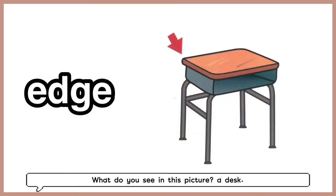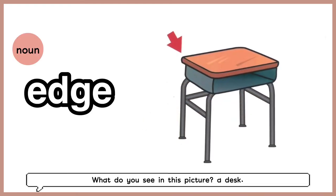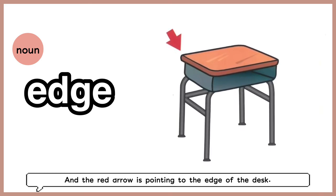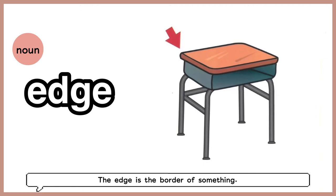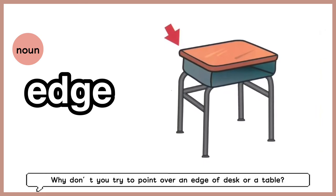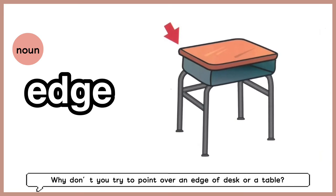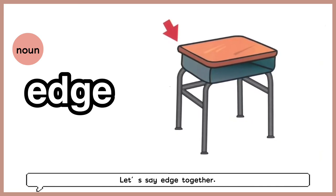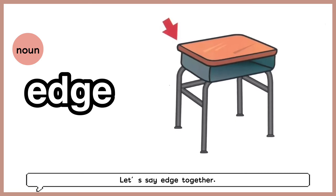What do you see in this picture? A desk, and the red arrow is pointing to the edge of the desk. The edge is a border of something — it's where the two flat parts come together. Why don't you try to point to an edge of your desk or a table? Let's say edge together: edge.